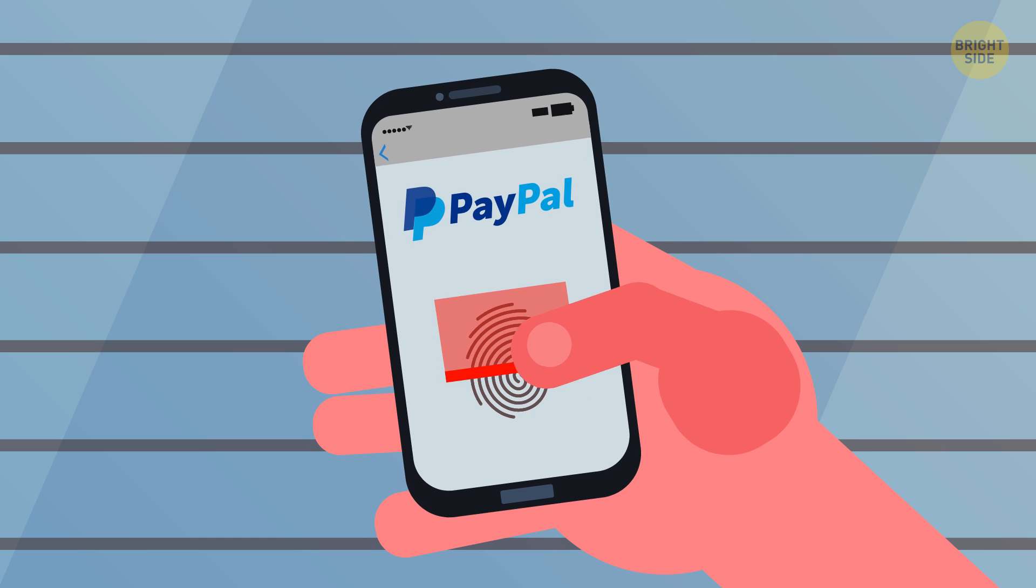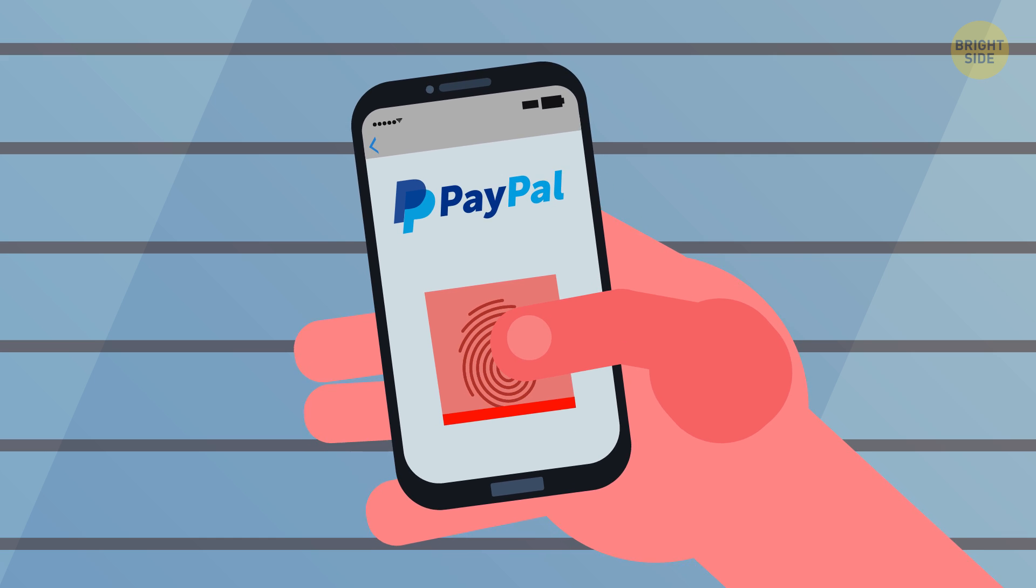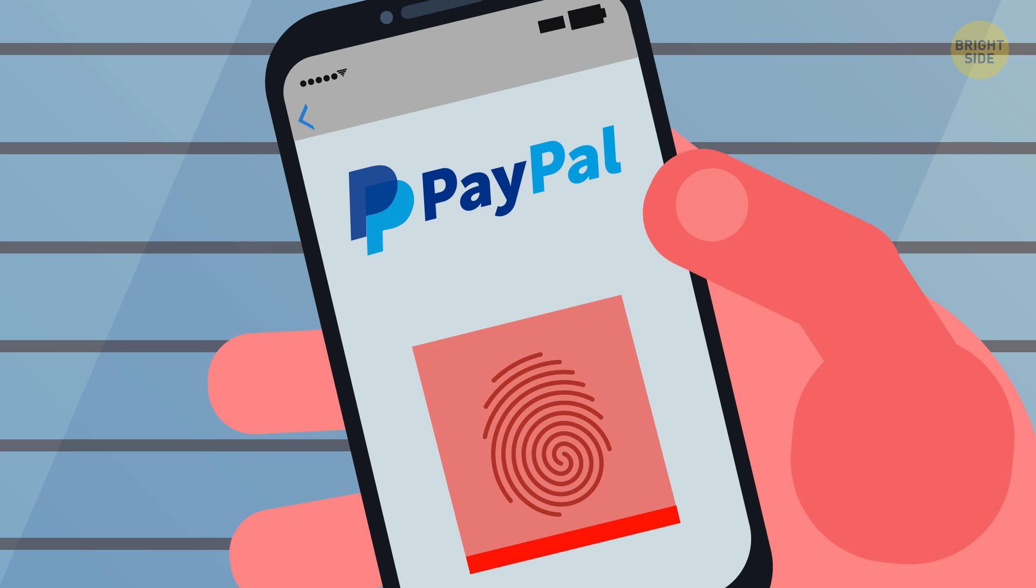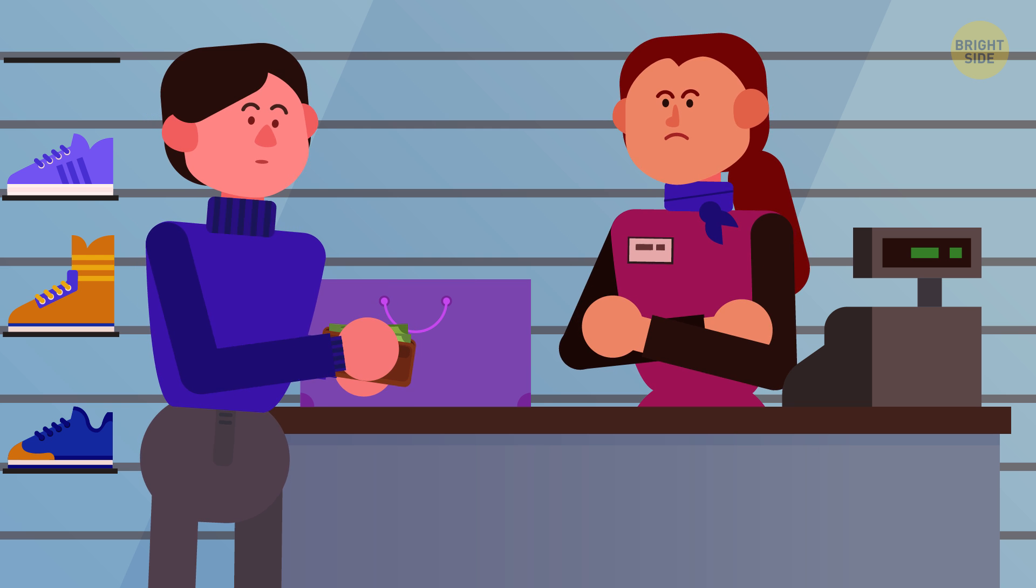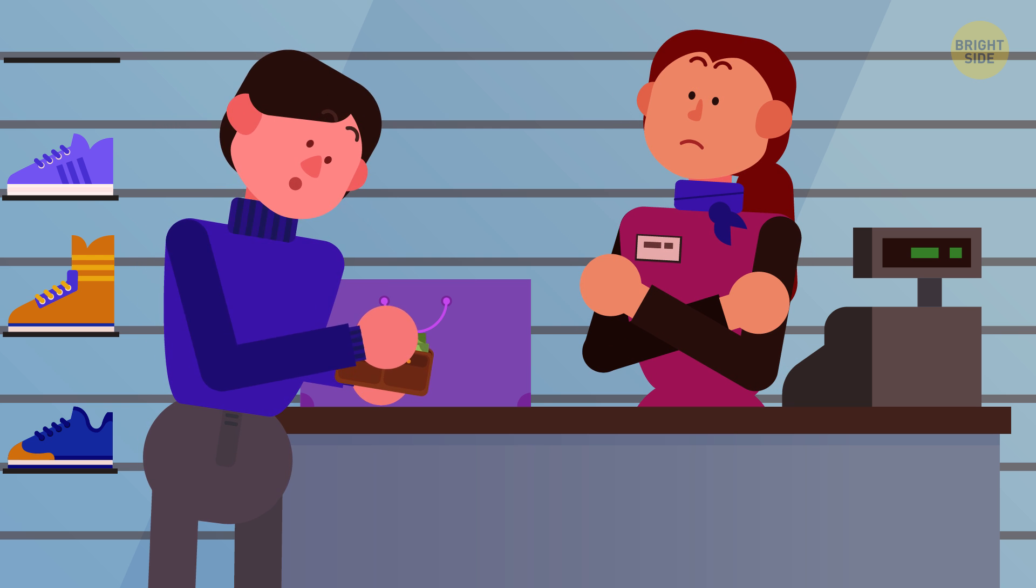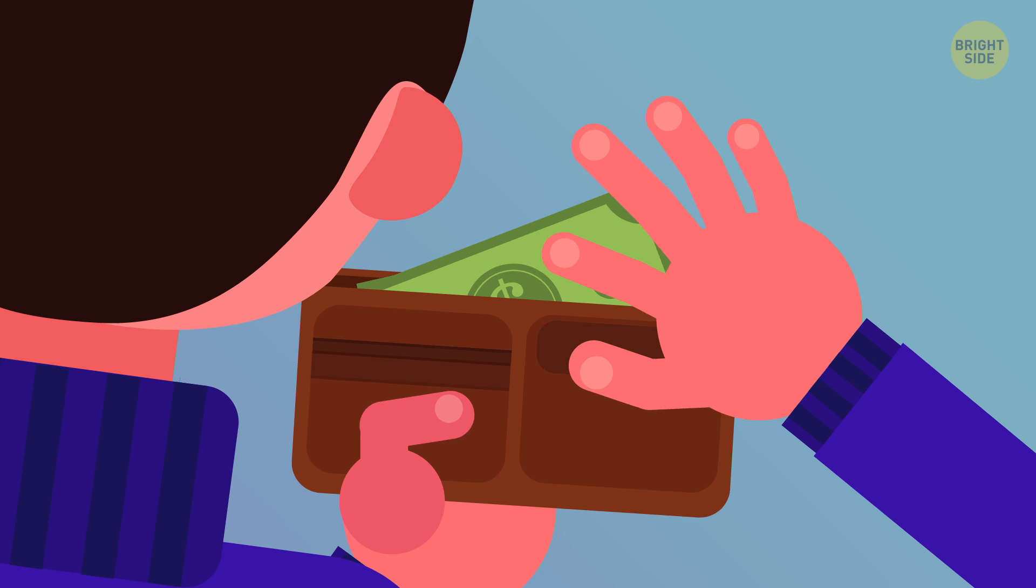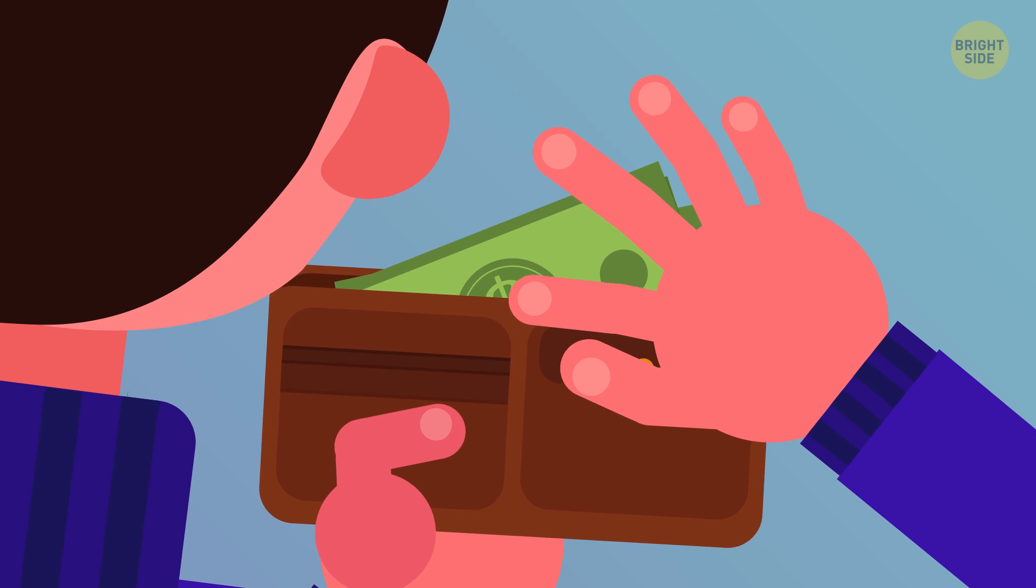Then, when you try to pay for the sneakers, you can't use PayPal on the phone, because it doesn't read your fingerprint. So, you decide to pay in cash, but it takes forever to get the money from your wallet, and you awkwardly count the required amount.